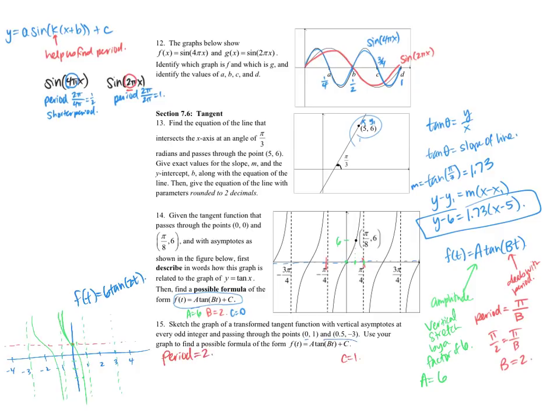And my period I know is pi over b, so pi over b equals 2, so pi equals 2b, so b is equal to pi over 2.